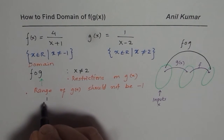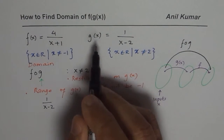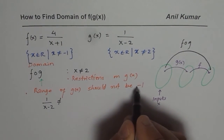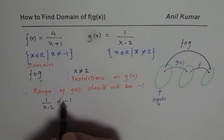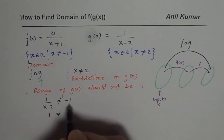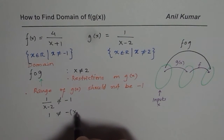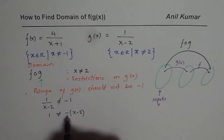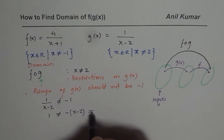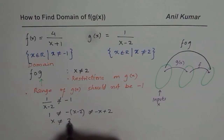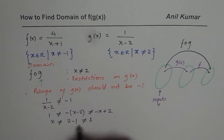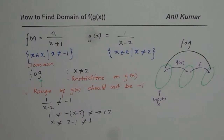We solve 1/(x-2) ≠ -1. Cross-multiplying gives 1 ≠ -(x-2), which simplifies to 1 ≠ -x+2. Solving, we get x ≠ 2-1, so x cannot be equal to 1. Therefore the second restriction is that x cannot equal 1.